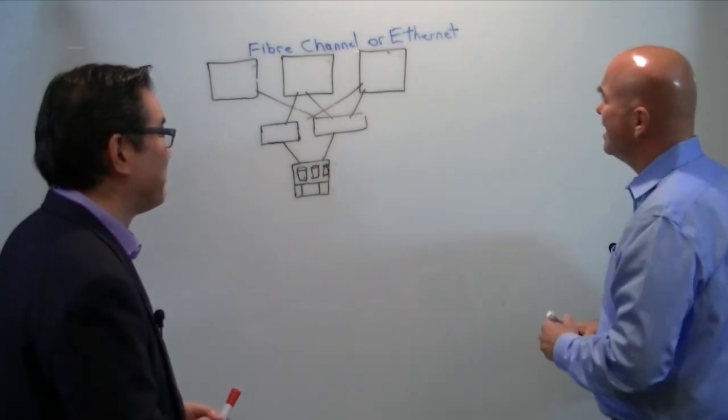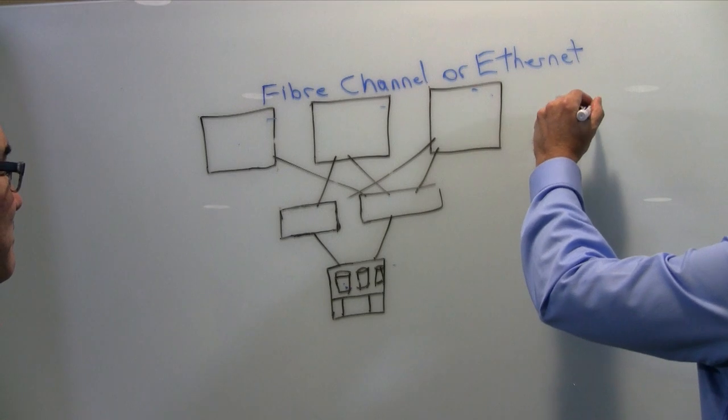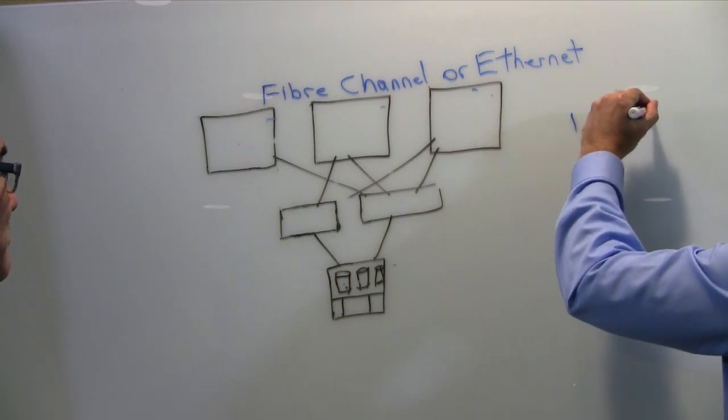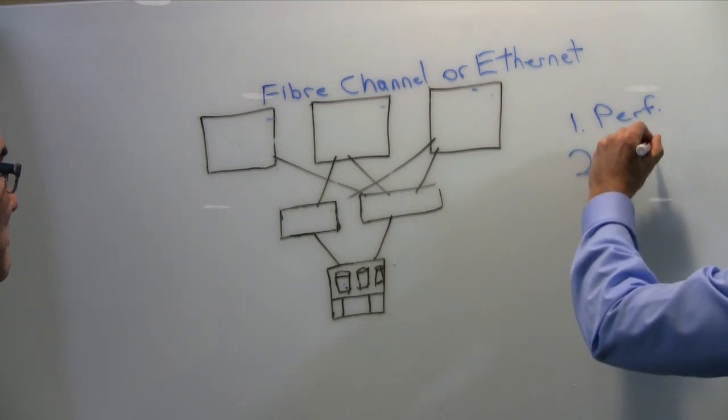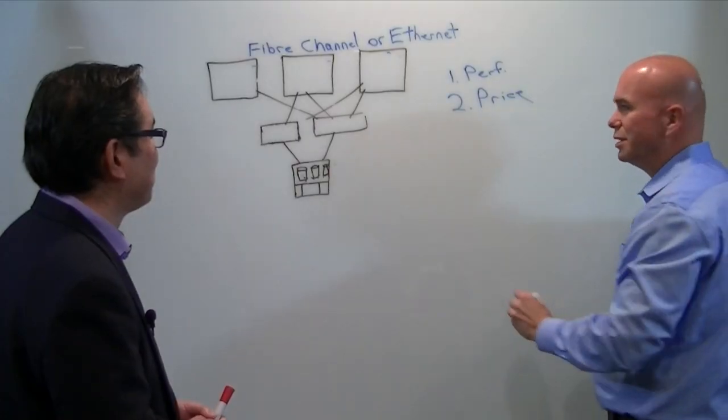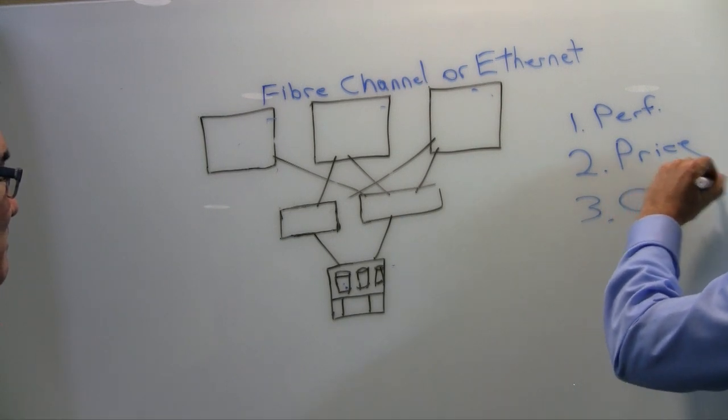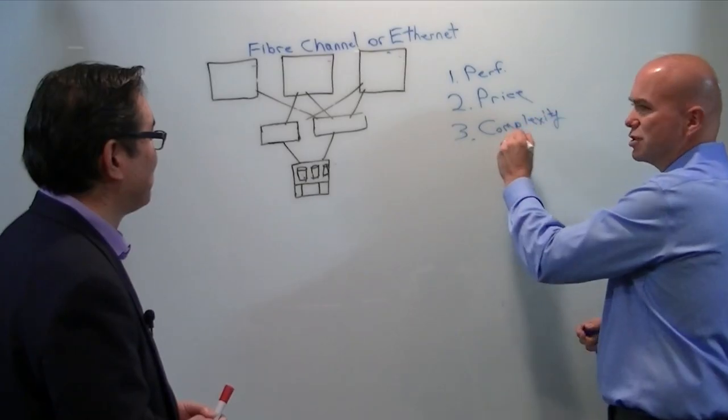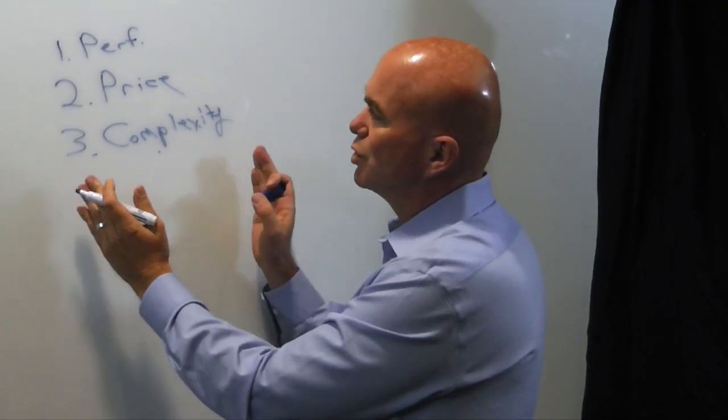So if I break down what I hear as the Ethernet claims, number one is performance - it's faster. Number two is price - it's cheaper. And number three is complexity, or in their case, it's simpler. So let's examine the fiber channel response to that.